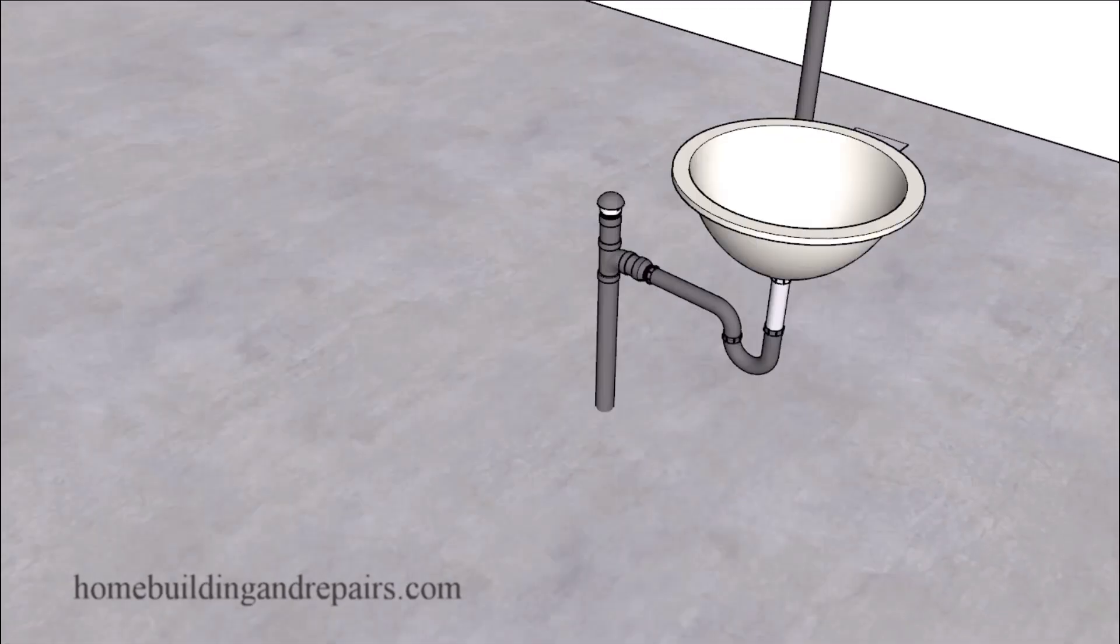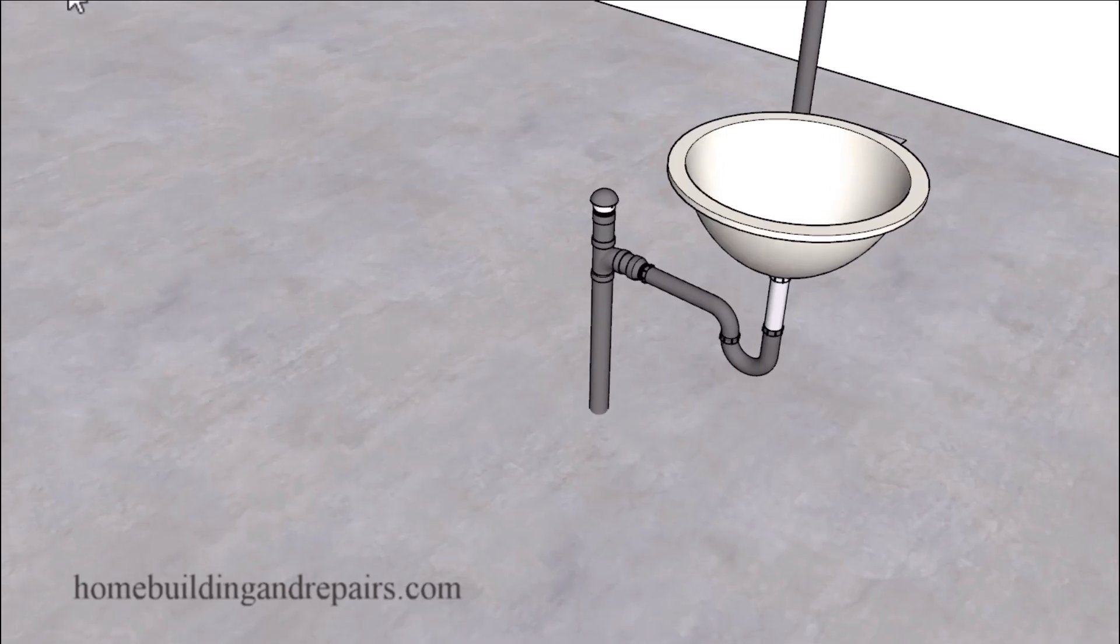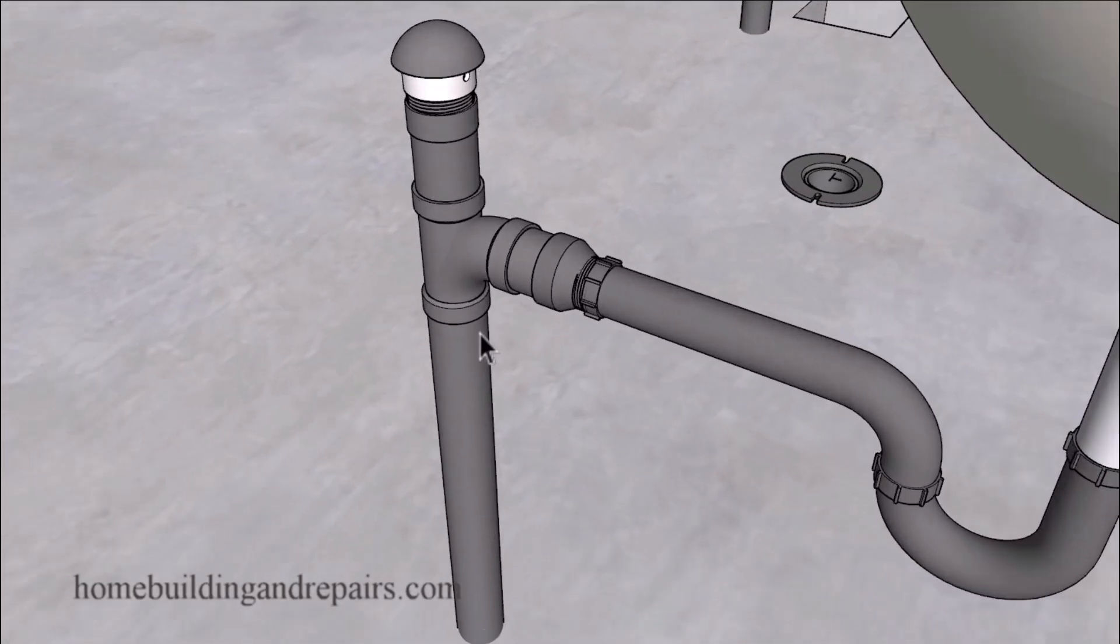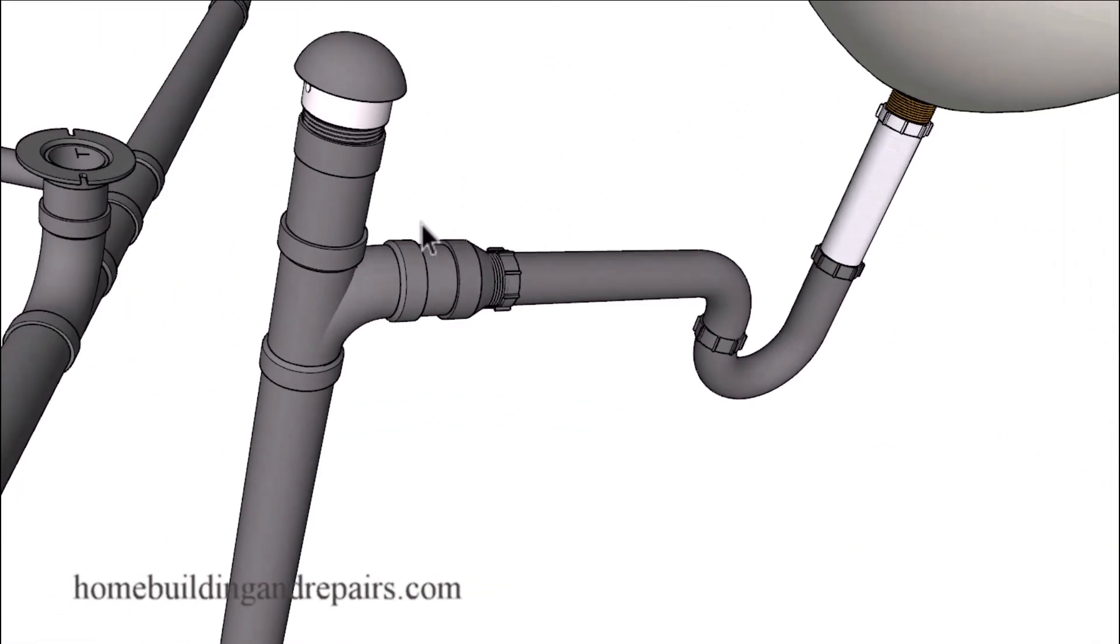The first thing I would suggest, if you're allowed to use them in your area, would be an air admittance valve. This is going to be the easiest way to fix something like this. You can usually do it by cutting a section of the pipe so that you can attach a sanitary T along with the air admittance valve and a regular P-trap. This would be the easiest way.